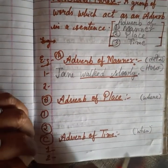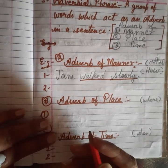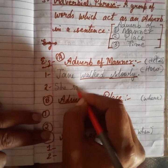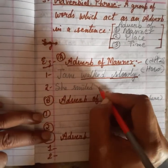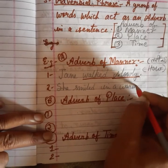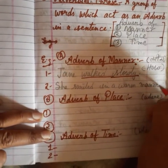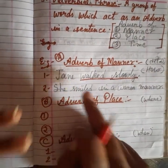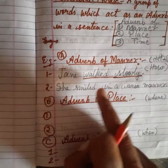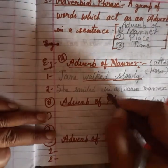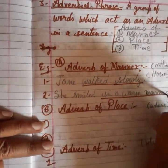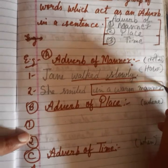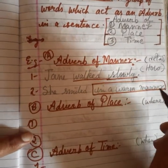दूसरा example of adverb of manner: 'She smiled in a warm manner.' How she smiled? She smiled in a warm manner। 'In a warm manner' यह एक तरीका show करेगा — वो कैसे हँसी। तो 'in a warm manner' यहाँ adverbial phrase of manner show करेगा।